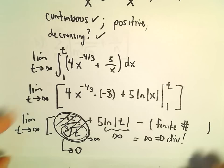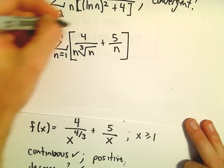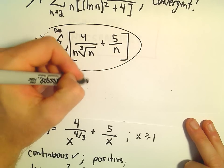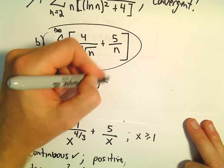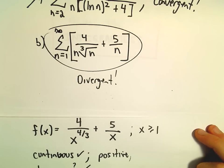So since the improper integral is divergent, so also this original series must be divergent. It must be divergent as well.